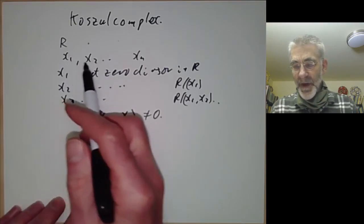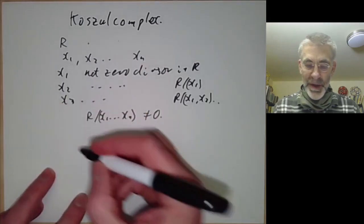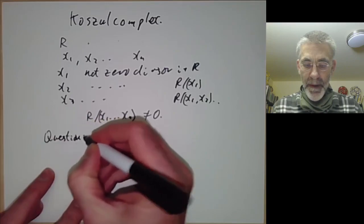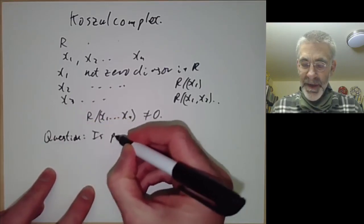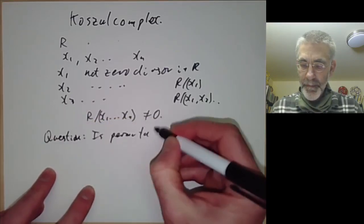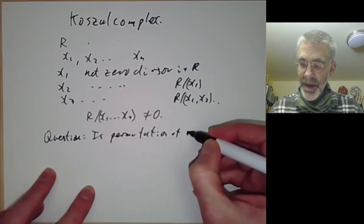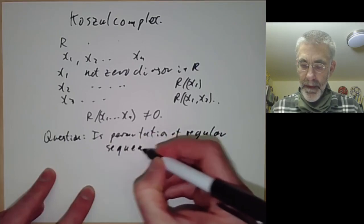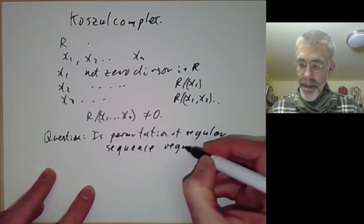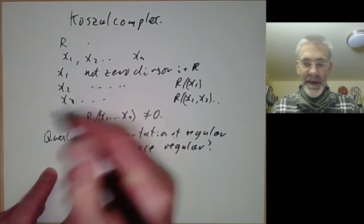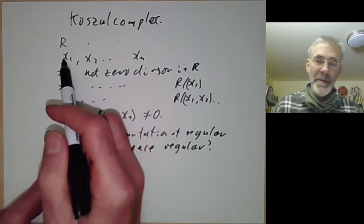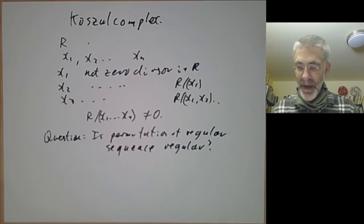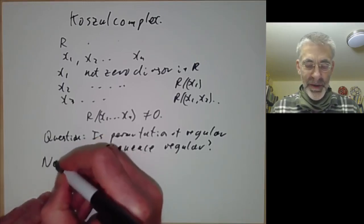The definition of regular sequence depends on the order and we can ask the following question: is a permutation of a regular sequence also regular? If it is, that would make life much easier because we wouldn't have to worry about the order of the regular sequence. And the answer is no in general.